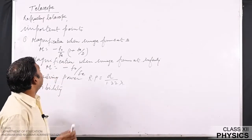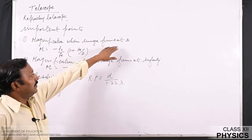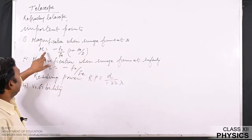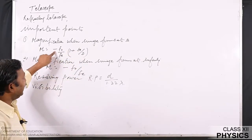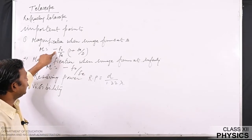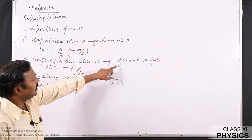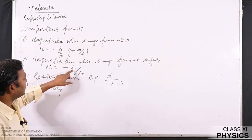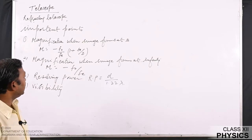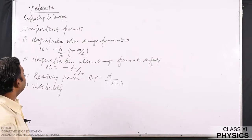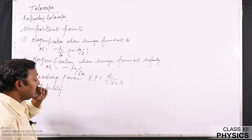Here are the important points related to the refracting telescope. The magnification when the final image forms at the distance of distinct vision is M = −F₀/Fₑ × (1 + Fₑ/D). The negative sign indicates that the final image is virtual, that is it is inverted with respect to the object. When the image forms at infinity, magnification is M = −F₀/Fₑ. A better telescope should have high magnification power, high resolving power, and good visibility.